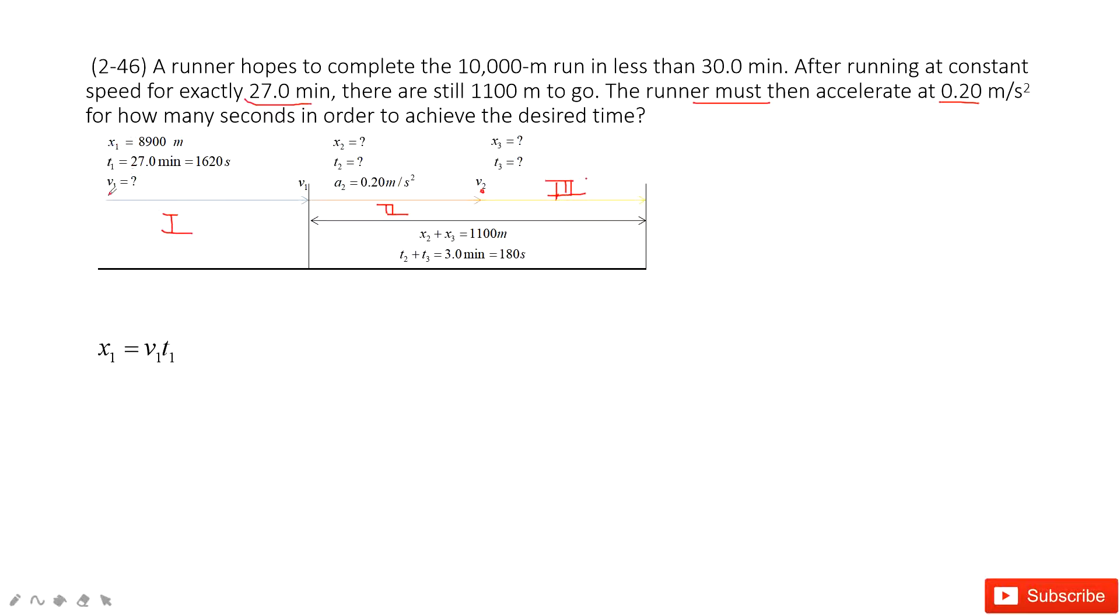In part 1, the runner moves at constant velocity, so v1 can be found using this very simple equation: 5.5 meter per second. And then at this part, we can satisfy these two conditions. We find x2 and x3.